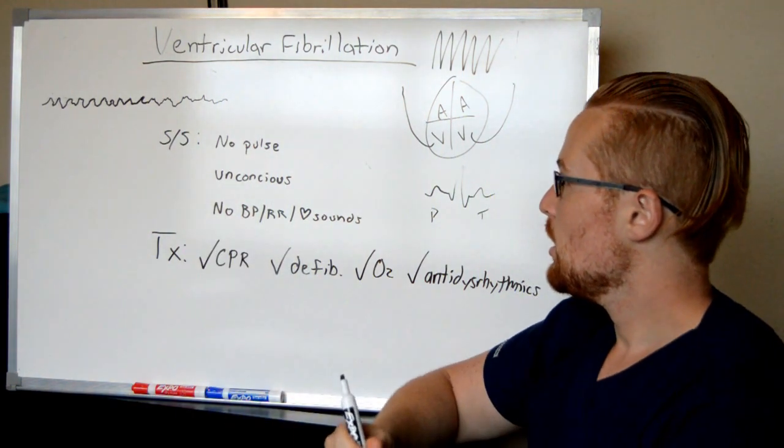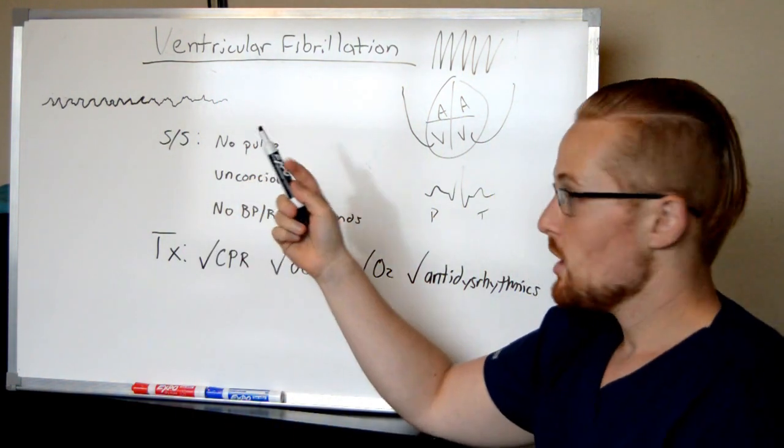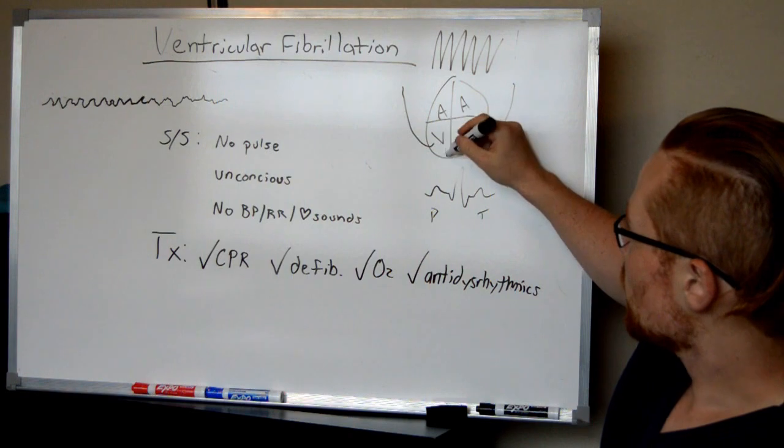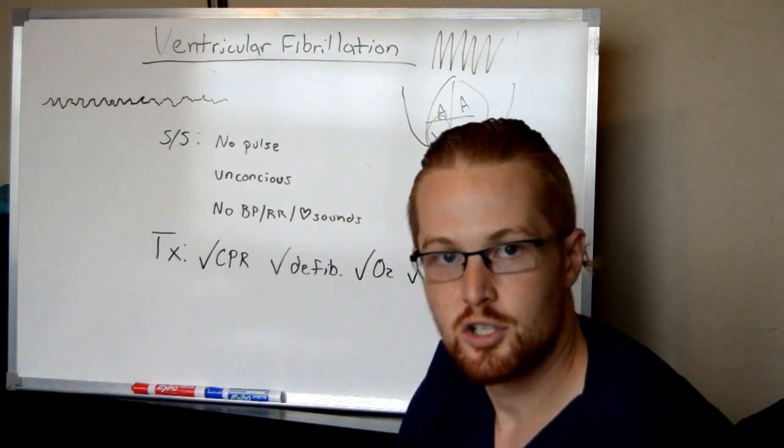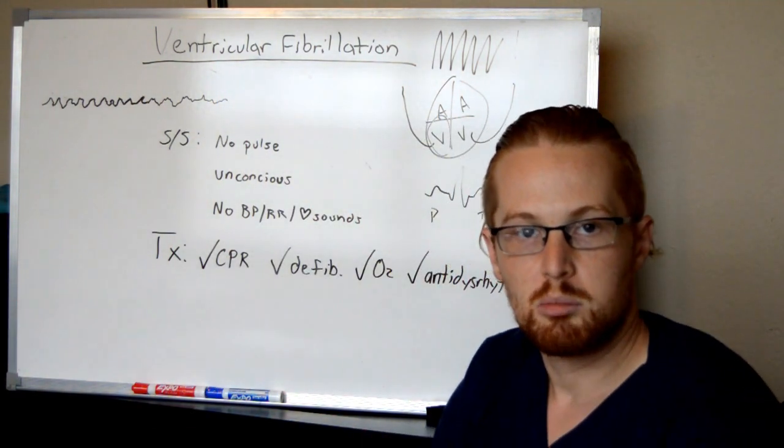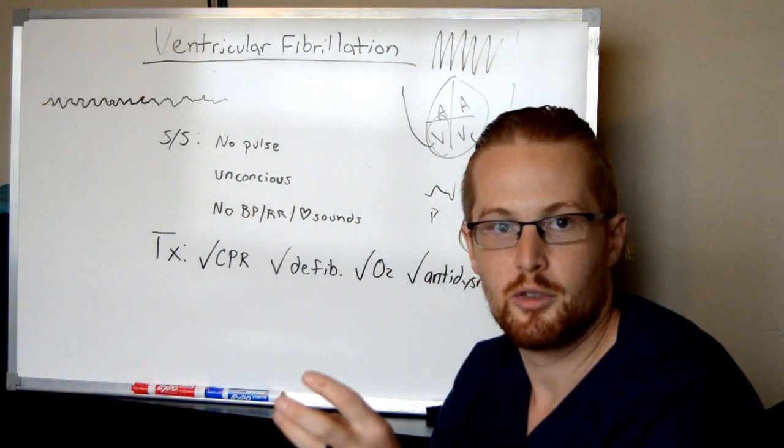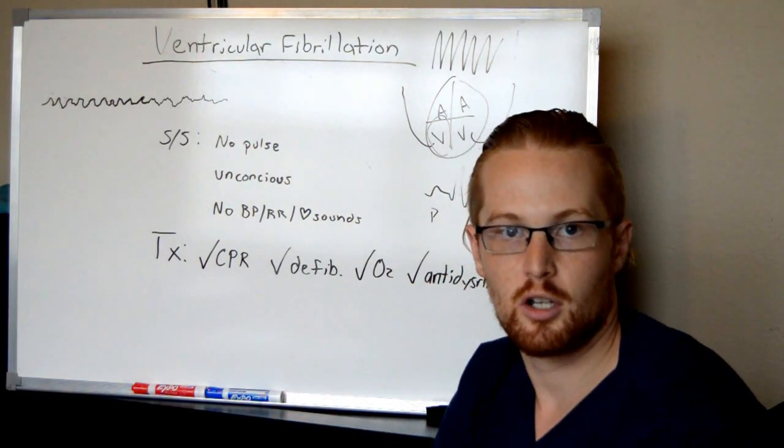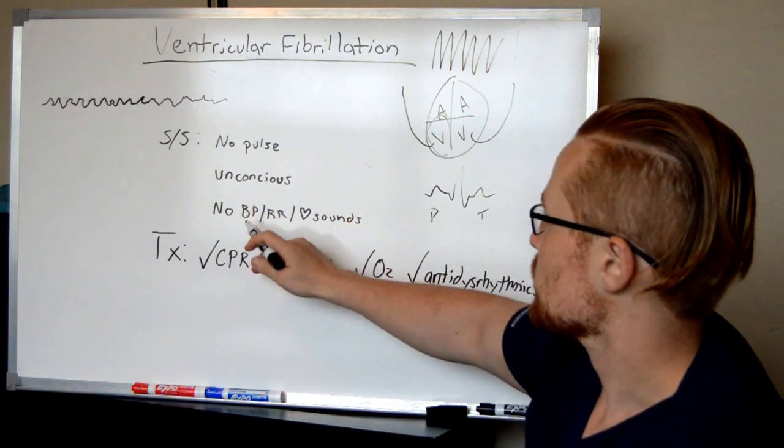The signs and symptoms of the patient, they're not going to have any pulse because the pulse is a result of the ventricles contracting, but they're not contracting, so there's no pulse. Blood pressure is caused by the push of the blood through the blood vessels, pushing pressure on the blood vessels. They're not pulsating. There's no blood pressure.